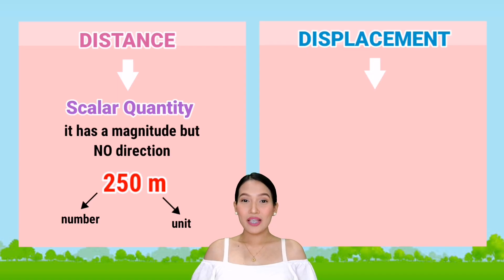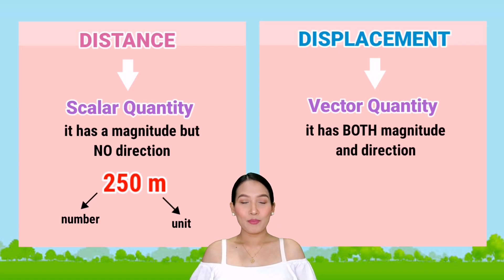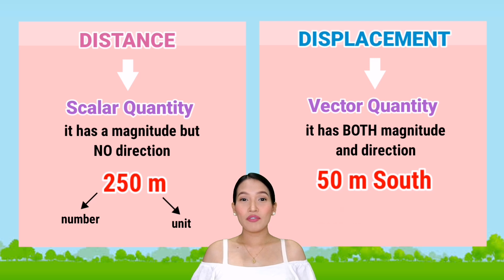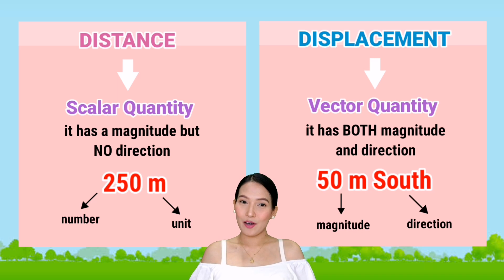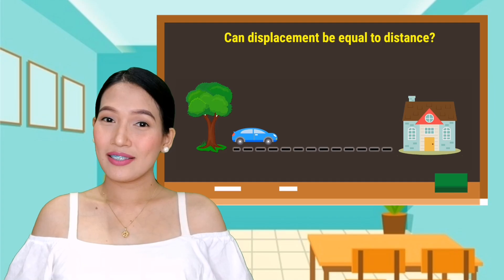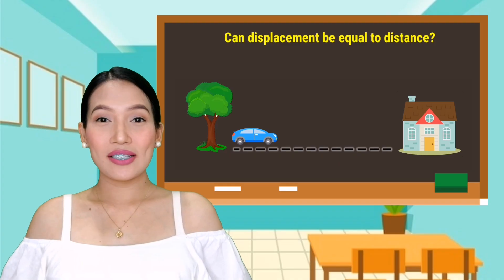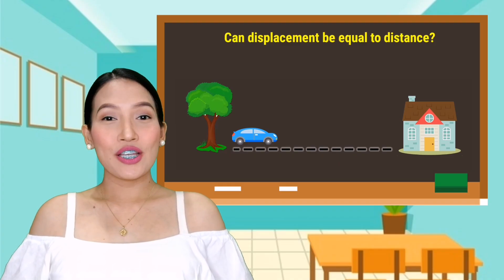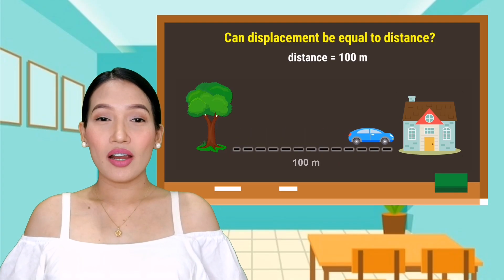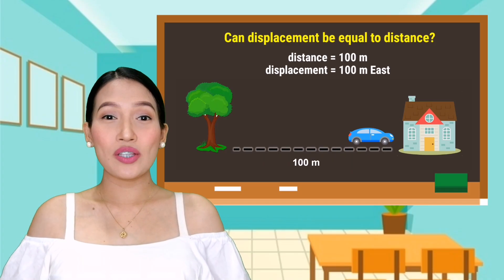On the other hand, displacement is a vector quantity, meaning it has both magnitude and direction. For example, 50 meters south is composed of the magnitude which is 50 meters and the direction which is south. Can displacement be equal to distance? The answer is yes. This can happen when the path traveled by an object is a straight line. For example, the distance traveled by the car is 100 meters, therefore its displacement is also 100 meters going to the east.